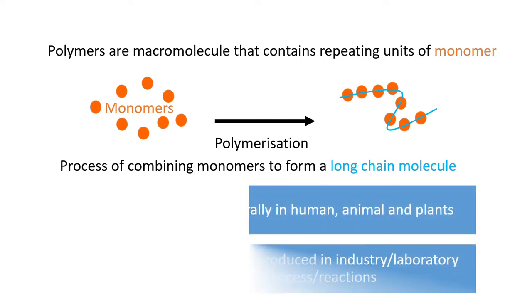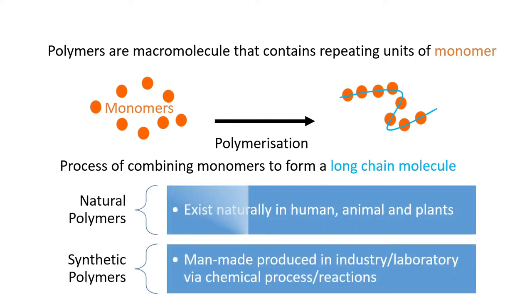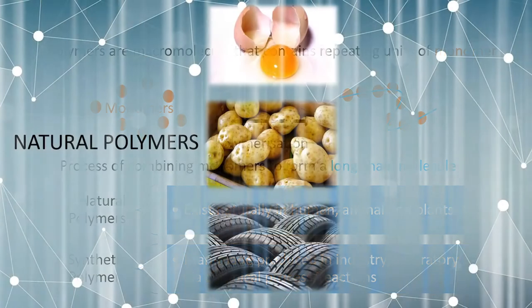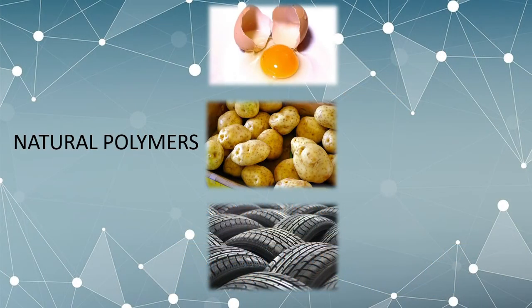Polymers are classified into natural and synthetic polymers. Natural polymers exist in humans, animals, and plants, while synthetic polymers are produced by chemical reactions in a lab or industries. Let's have a look at some examples of natural polymers.